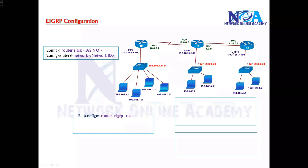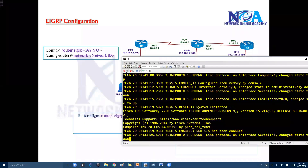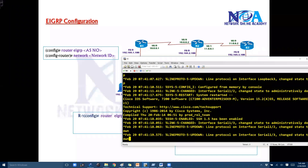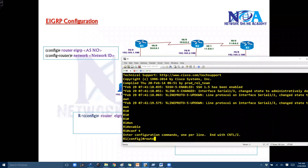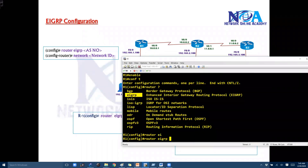Next we will get into the configuration of EIGRP. The EIGRP configuration is very simple and straightforward. Assume there are three routers and I want to run EIGRP between them. The configuration starts with the command 'router EIGRP', then we specify which routing protocol to use. On router one, the first command is 'router' and then we select the routing protocol — in this example, EIGRP.